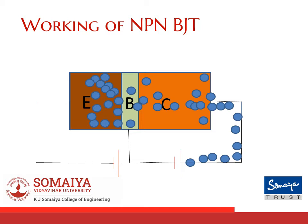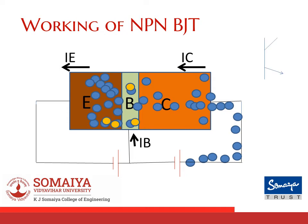This constitutes two currents: emitter current and collector current. At the same time, the majority charge carriers in the base will also gain enough energy to move from the base-emitter junction to the negative plate of the battery. Note that the charge carriers in the base are holes, and they will constitute a current IB. The directions of emitter current, collector current, and base current are as shown. Note that the current directions for emitter and collector are exactly opposite to the movement of charge carriers, whereas the current direction for base is equal to the movement of charge carriers in the base. The direction of emitter current is also depicted in the symbol for an NPN BJT.